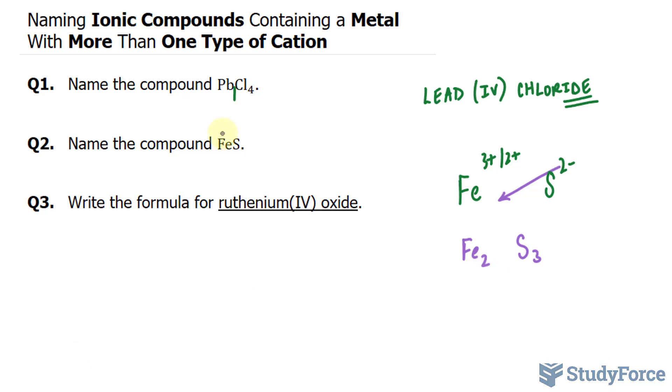But since we have FeS without any numbers, this had to have been 2 because by reducing this, we end up with FeS. Therefore, the name of this compound is iron 2 in Roman numerals, sulfide.